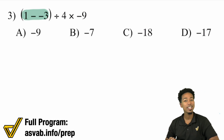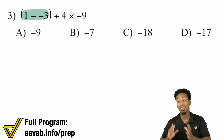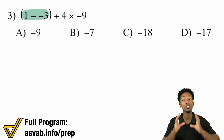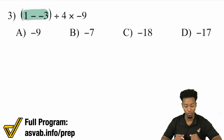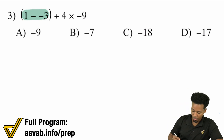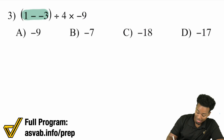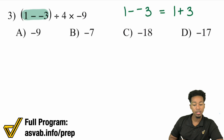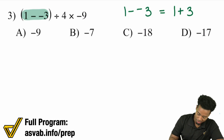The biggest mistake people make is thinking they have to do multiplication first and then division — no, it's whichever one comes first. So take care of the parentheses first. Notice: one minus negative three — when you subtract a negative, that's the same thing as adding a positive. So one minus negative three is one plus three, which is four.